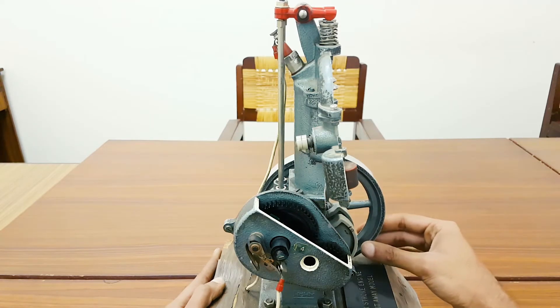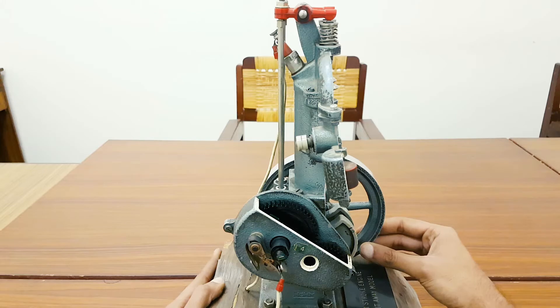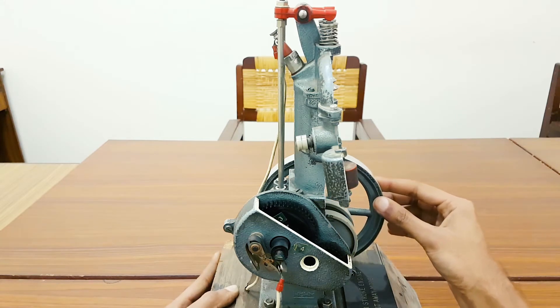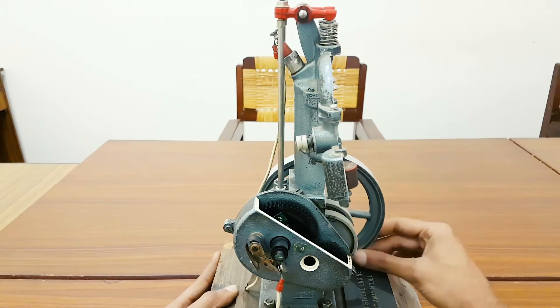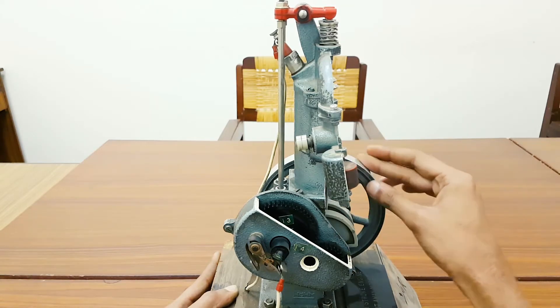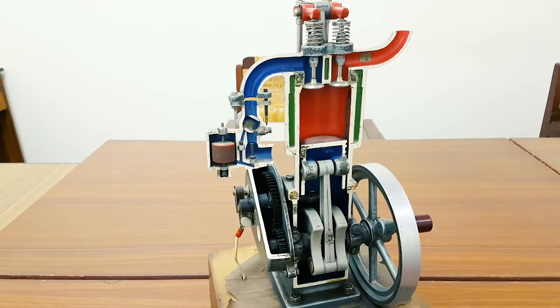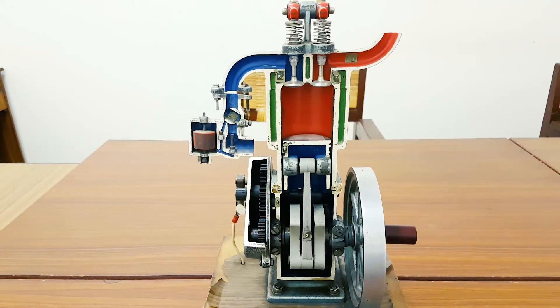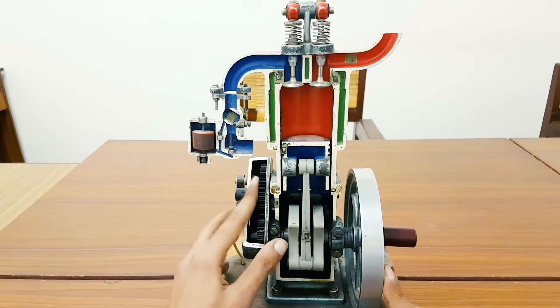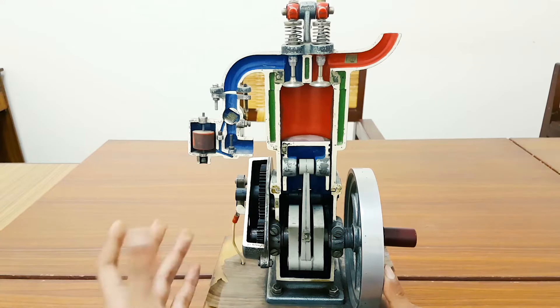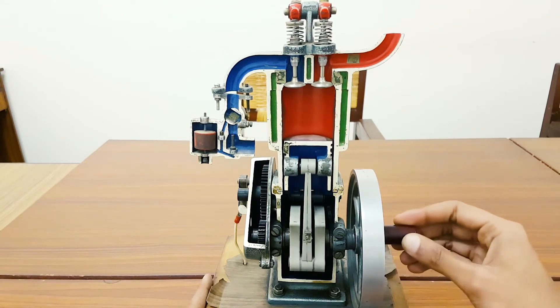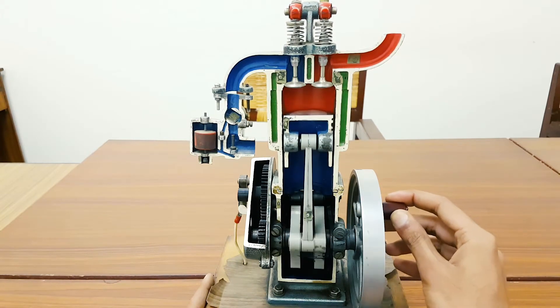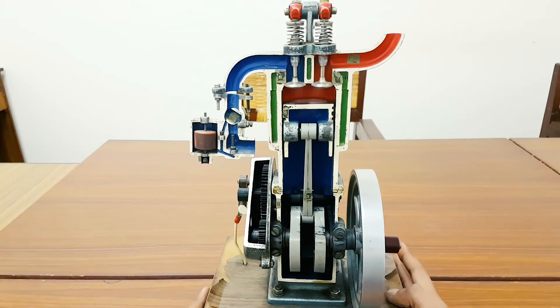The push rod—camshaft lifts the push rod, it then acts on the rocker arm, and the rocker arm opens your valve. The speed difference, the ratio between crankshaft and camshaft, is 2:1, which means two revolutions of crankshaft makes one revolution of your camshaft.